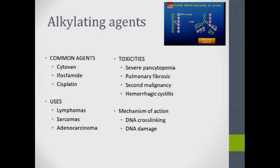Alkylating agents such as cyclophosphamide and cisplatin — we saw cisplatin and 5-FU in metastatic anal cancer — can cause pulmonary fibrosis and secondary malignancy. Hemorrhagic cystitis is the classic association. They're used in lymphoma, sarcomas, and anal cancer. The mechanism is DNA damage via cross-linking.